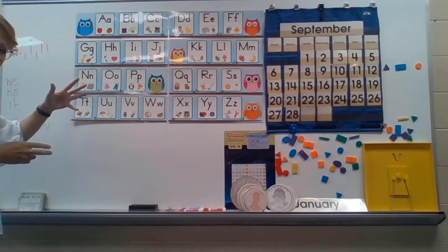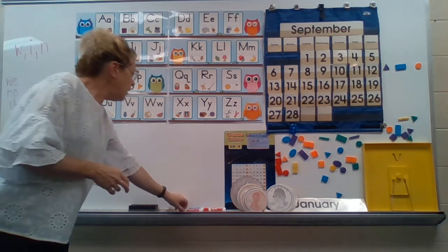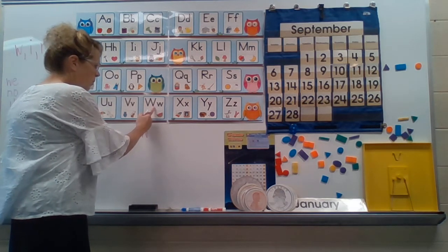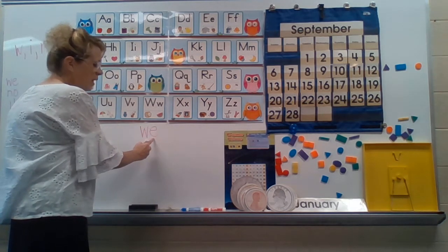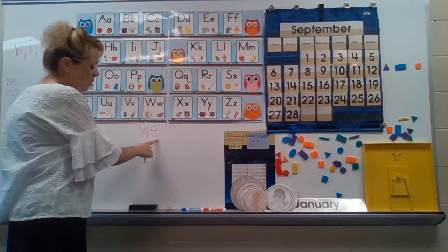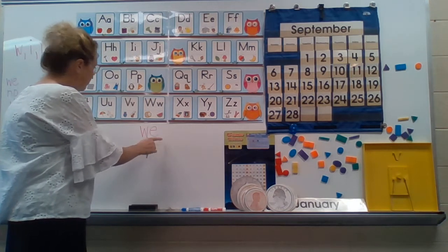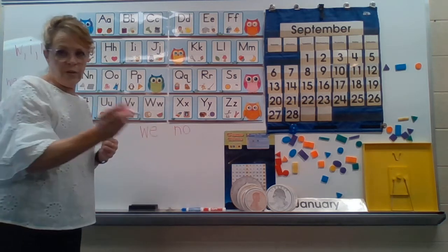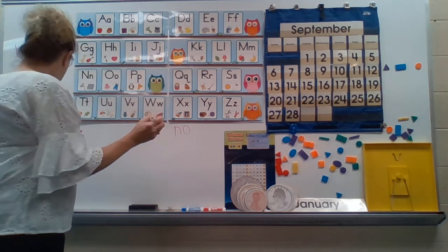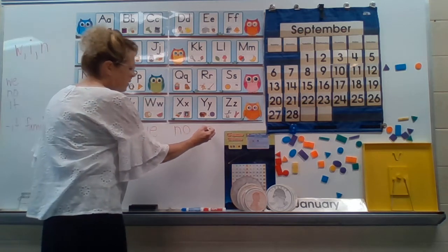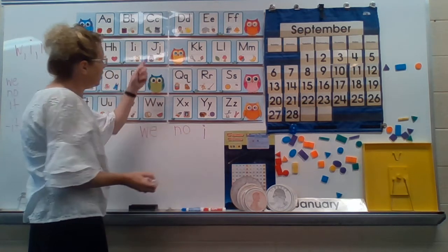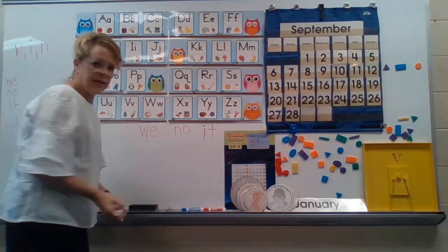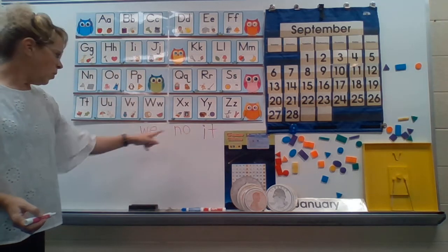We have three new sight words. Oh my goodness. They are we, that starts with a W. W, E. There's that long E. There's a vowel, E, that says its own name. E, we. And no, N-O. I bet you know how to spell that one. And it. I, that's short I, it. So these are the three sight words we're going to work with this week: we, no, and it.